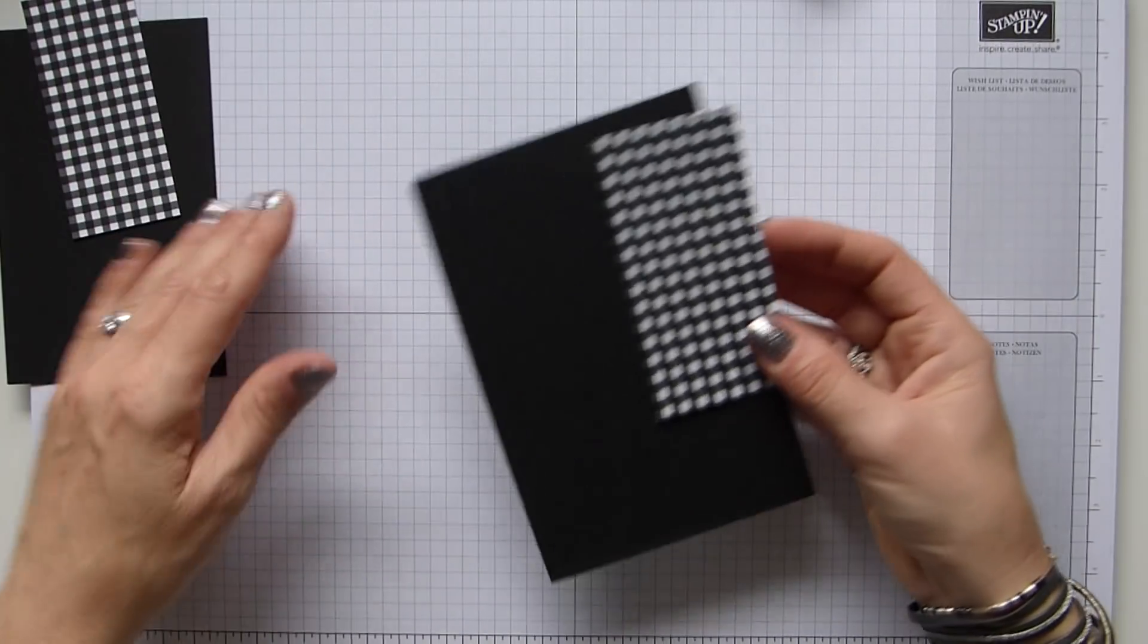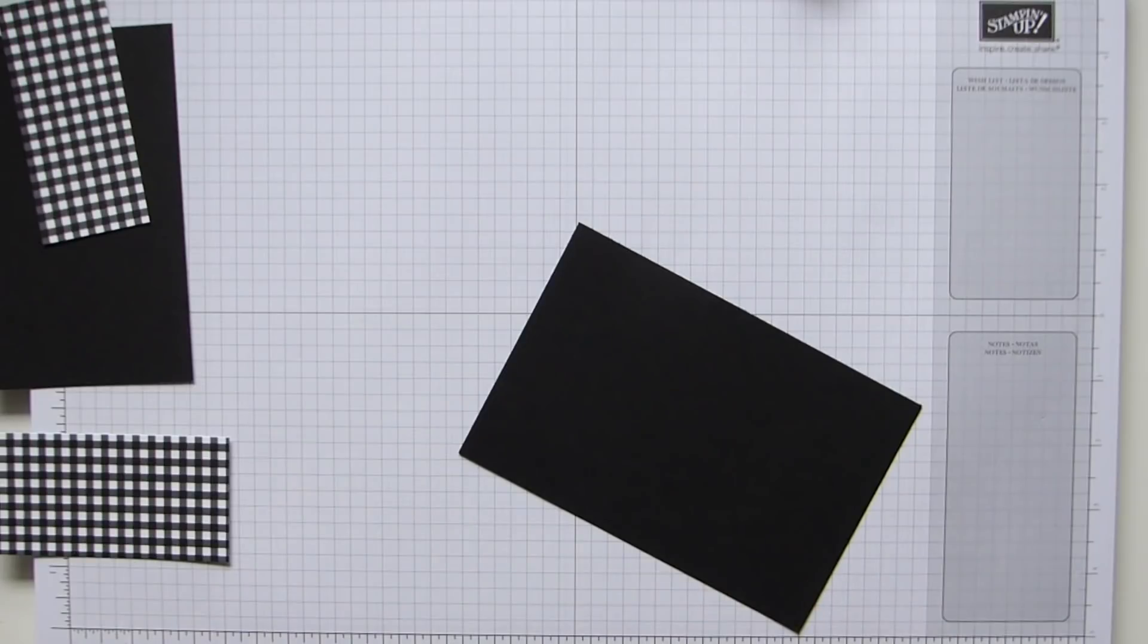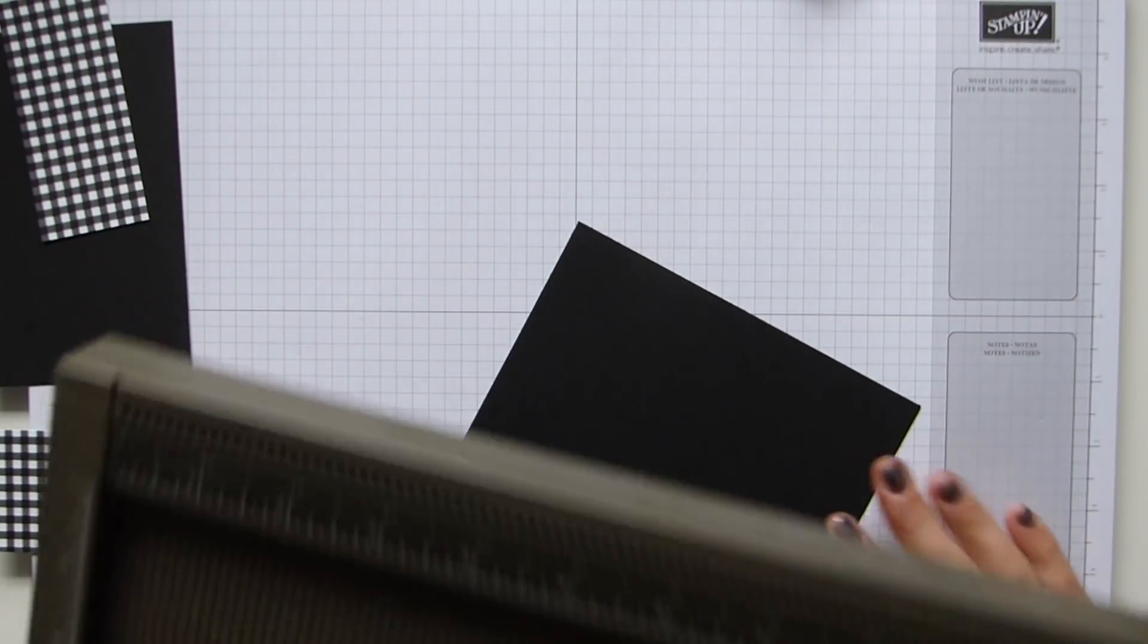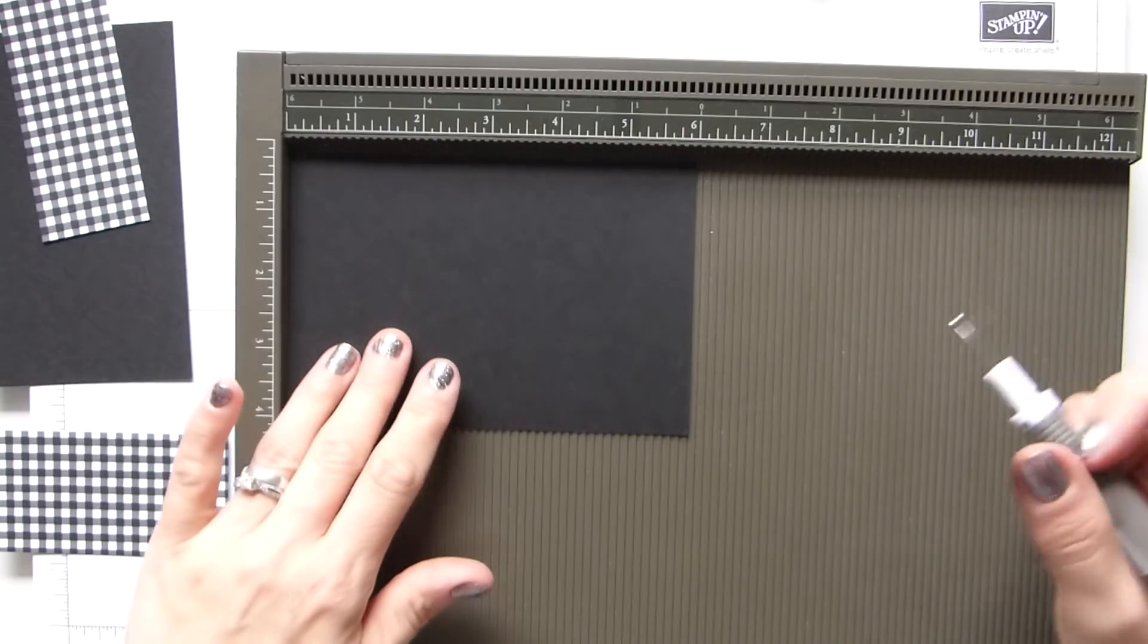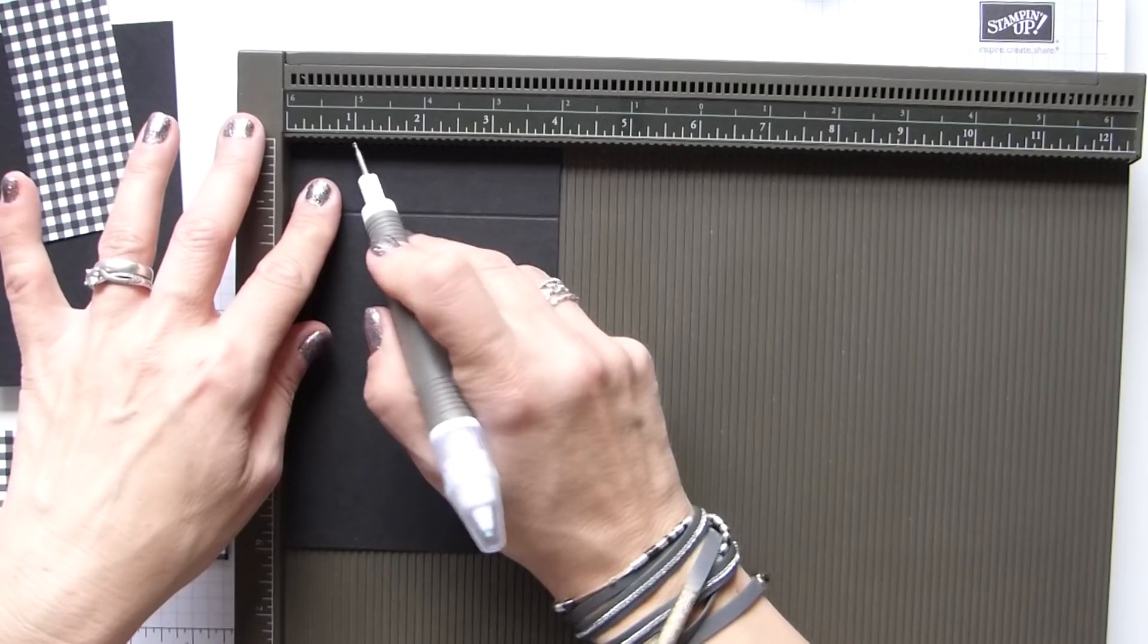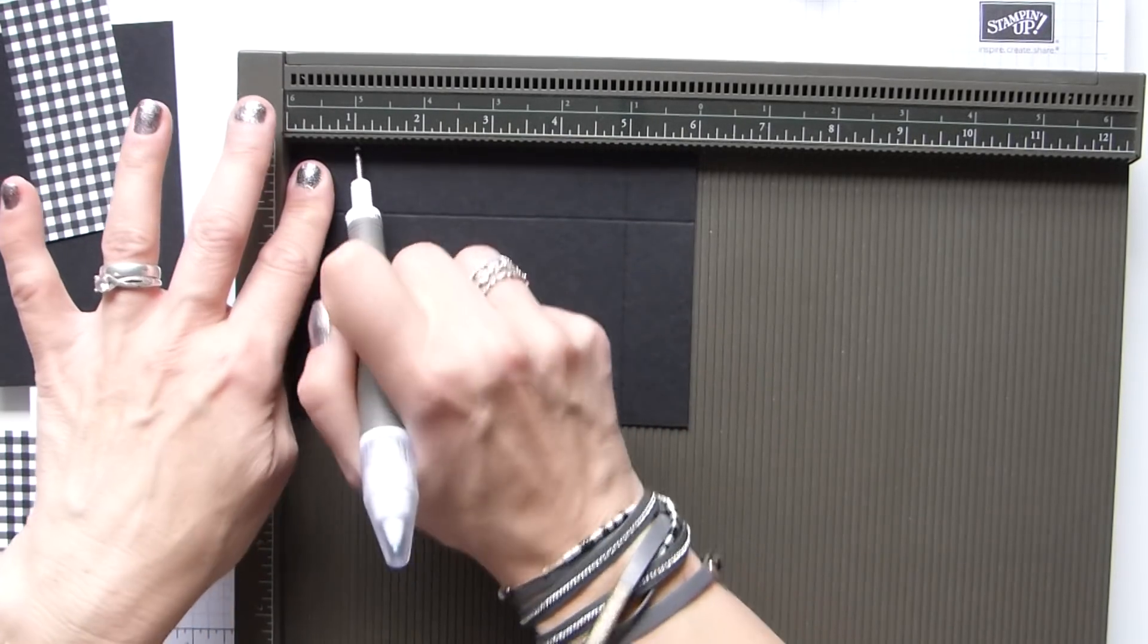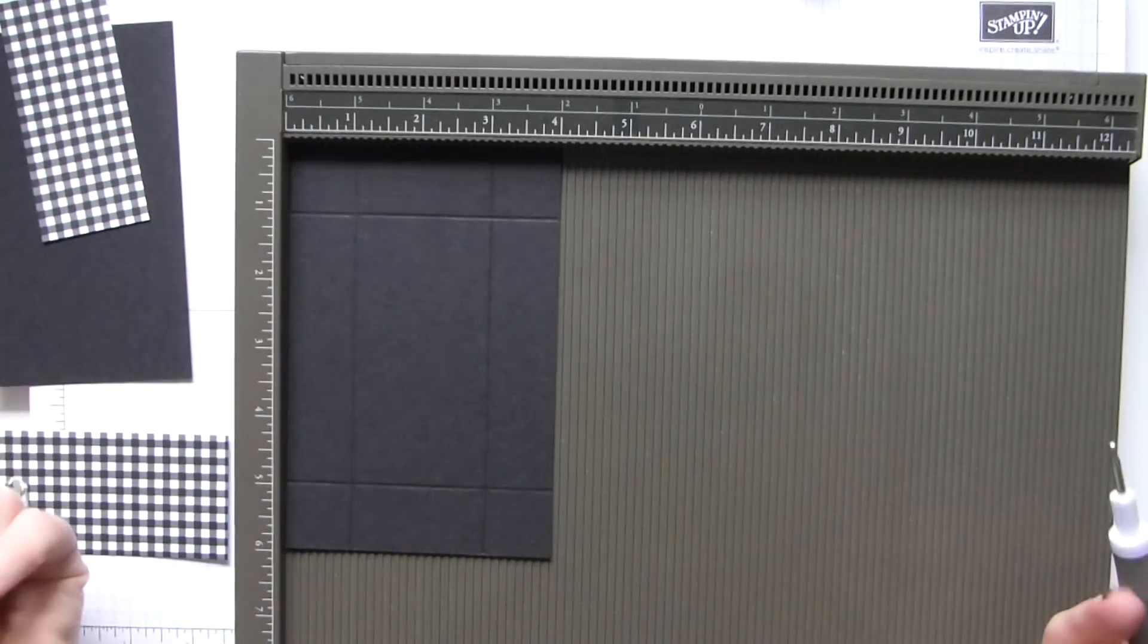So for the base, you will need a piece of black cardstock that measures 4 inches by 6 inches. And then we are going to score it at one inch on all sides. So in centimetres, it will be 10 centimetres by 17 centimetres. And you will be scoring at 2.5 centimetres on all four sides.